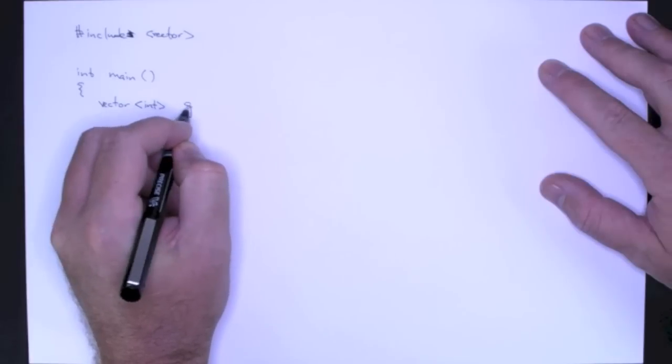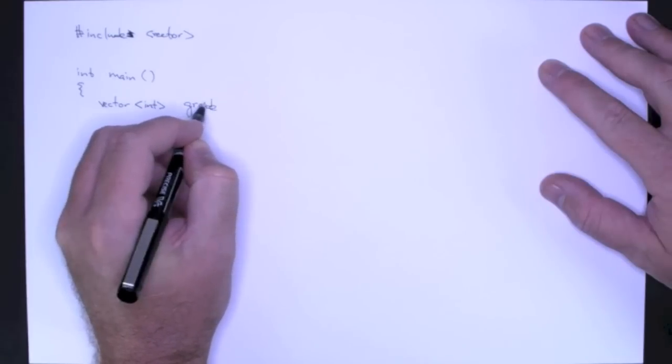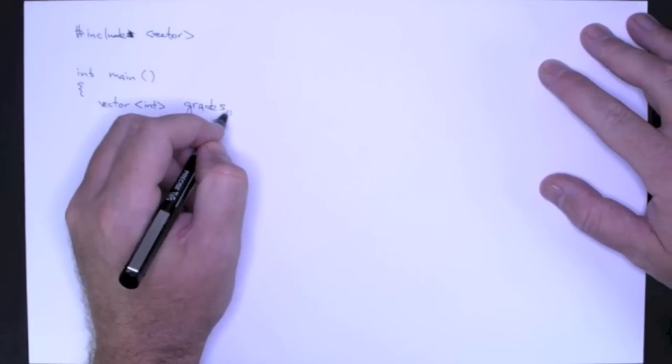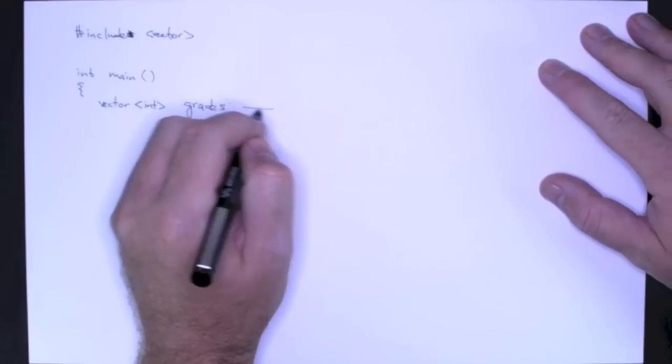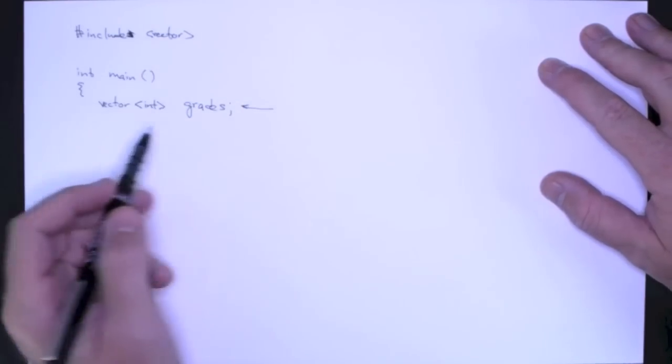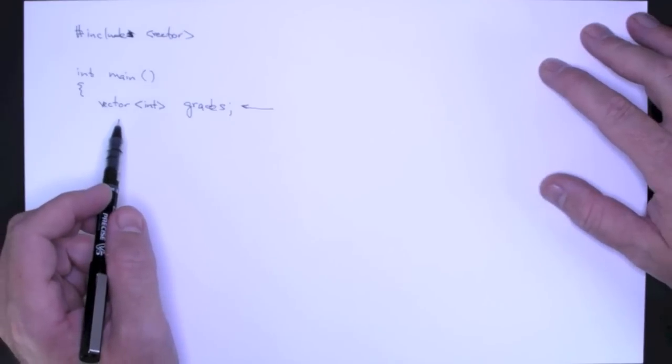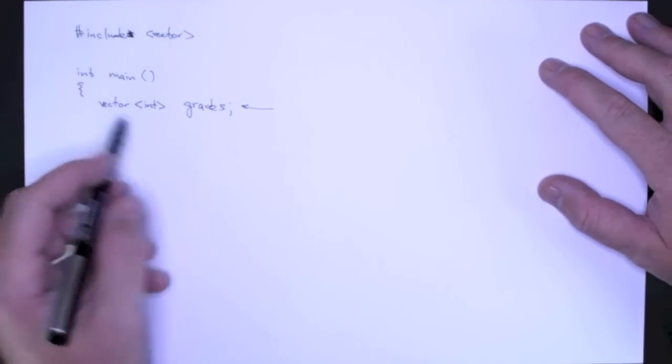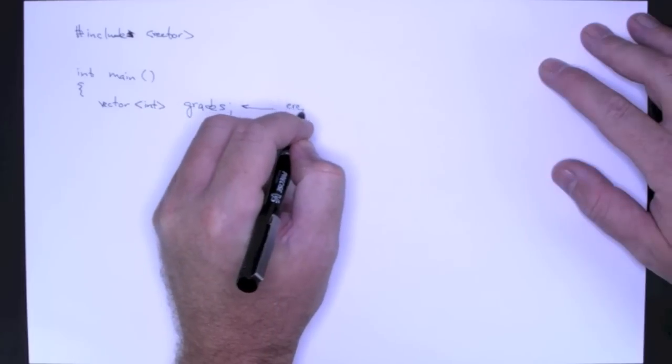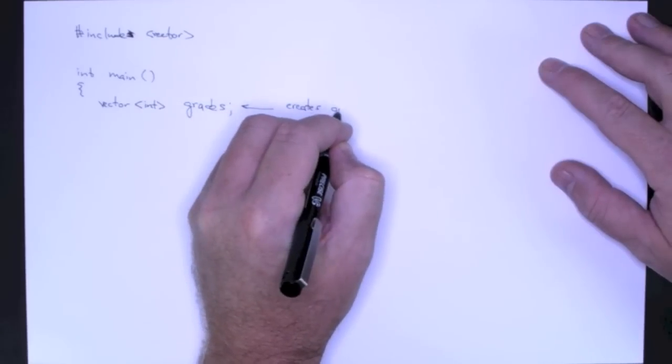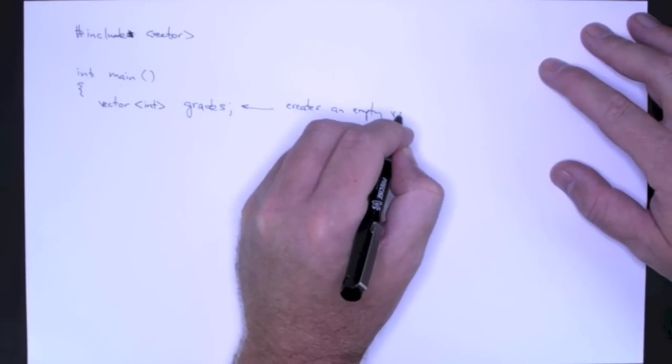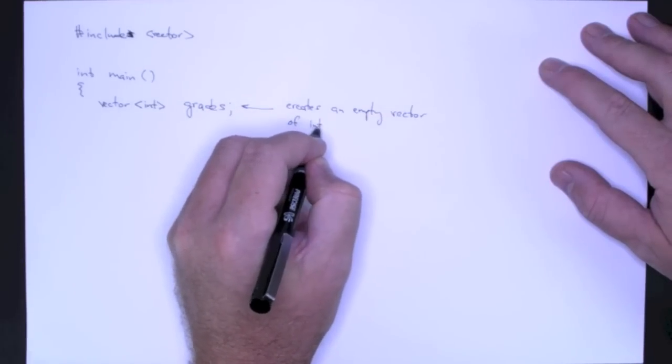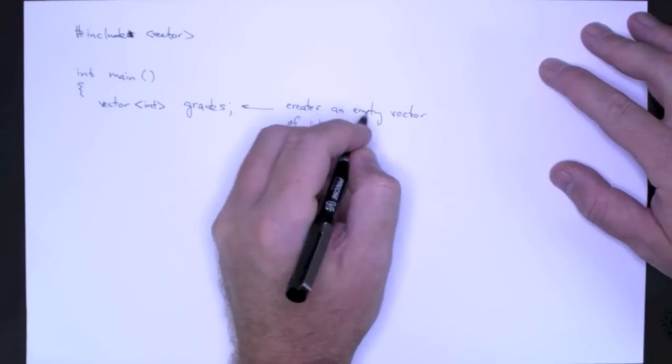Then we give our vector a name. So what this would do is this calls the default constructor, and it creates an empty vector of integers. So this creates an empty vector of ints via the default constructor.